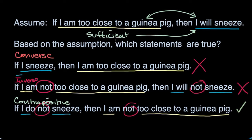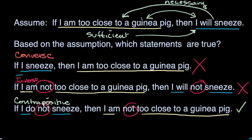One way to think about it: being too close to a guinea pig is sufficient for sneezing — if you just have that, then you are definitely going to sneeze; you don't need anything else. Going the other way, it isn't sufficient. Sneezing will be necessary when you are close to a guinea pig, but it's not sufficient to say that you are definitely close to a guinea pig. Sneezing could be caused by something else, like inhaling pepper. These are important ways to think about logical and conditional statements.